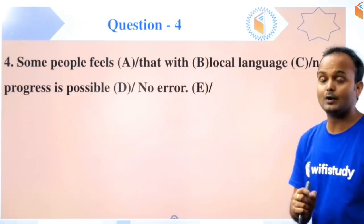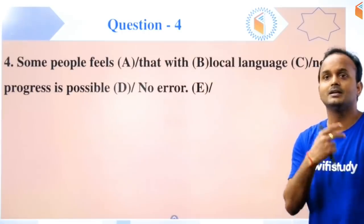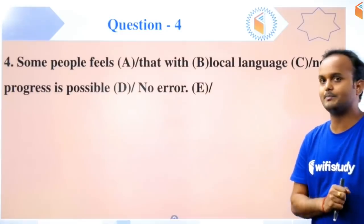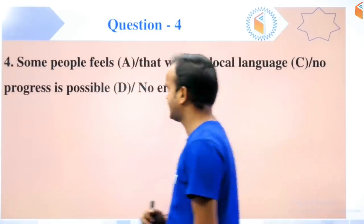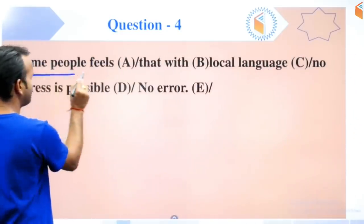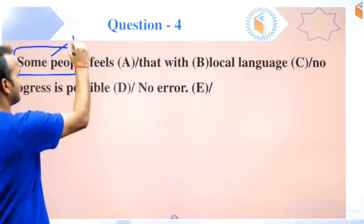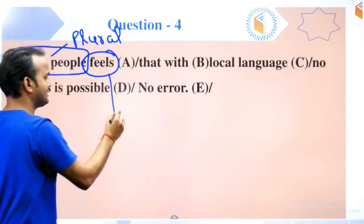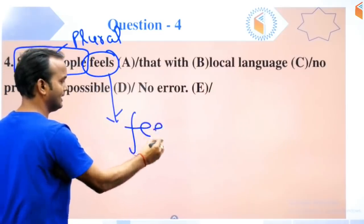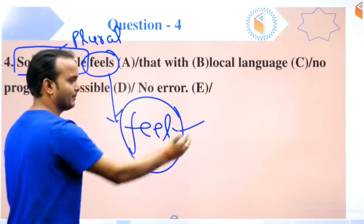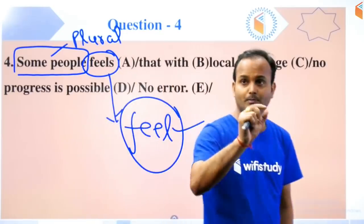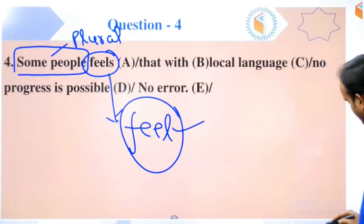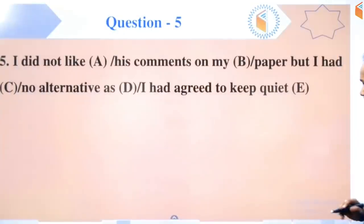Next question: 'Some people feels that with local language no progress is impossible.' You all know well - the subject is plural 'people', so the verb should also be plural. 'Feels' is not plural in any sense. It should be 'feel' to make it plural. If the verb is plural, the subject will be plural. If the subject is singular, the verb will be singular.